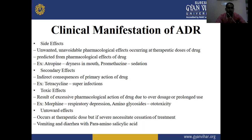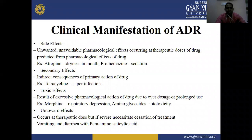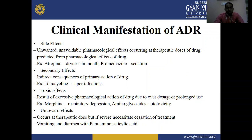Next are toxic effects — the result of excessive pharmacological action of a drug due to overdose or prolonged use. If a drug is overdosed or used for a prolonged period, toxic effects appear. For example, morphine in overdose causes respiratory depression. Aminoglycosides can cause ototoxicity. Ototoxicity is when a person develops hearing or balance problems due to medicines.